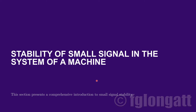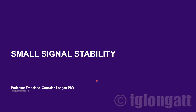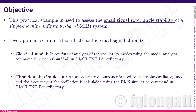Coming back to the problem: today we are studying small signal stability using a very simple system — the classical single machine infinite bus (SMIB) system. The objective is a practical example studying small signal rotor angle stability. We have been working with this system in many videos and hand calculations, and today we keep using the same system.